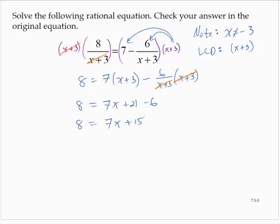This is a linear equation. So I will solve it by first subtracting 15 from both sides of the equation. So negative 7 is equal to 7x. And dividing through by 7, x is equal to negative 1.